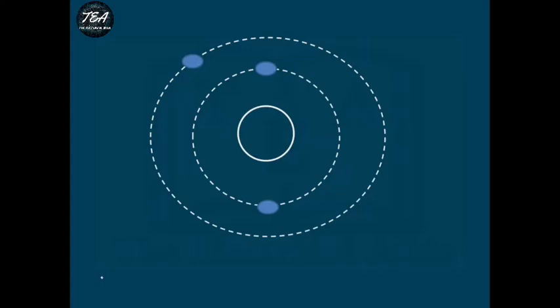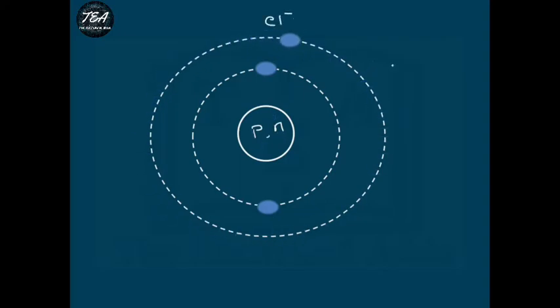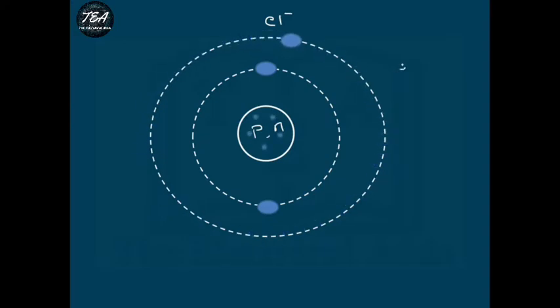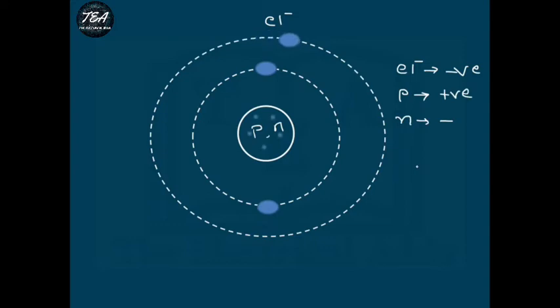To understand current, let's first see the concept of electrical charge. Any atom, which is the fundamental building block of any material, consists of three primary elements: protons and neutrons which reside in the nucleus, and electrons which move around the nucleus in orbits. Electrons in the outermost orbit can be easily knocked out of the atom by applying a little bit of energy, and these outermost electrons contribute to the flow of current. The electron possesses a negative charge, while the proton possesses a positive charge.